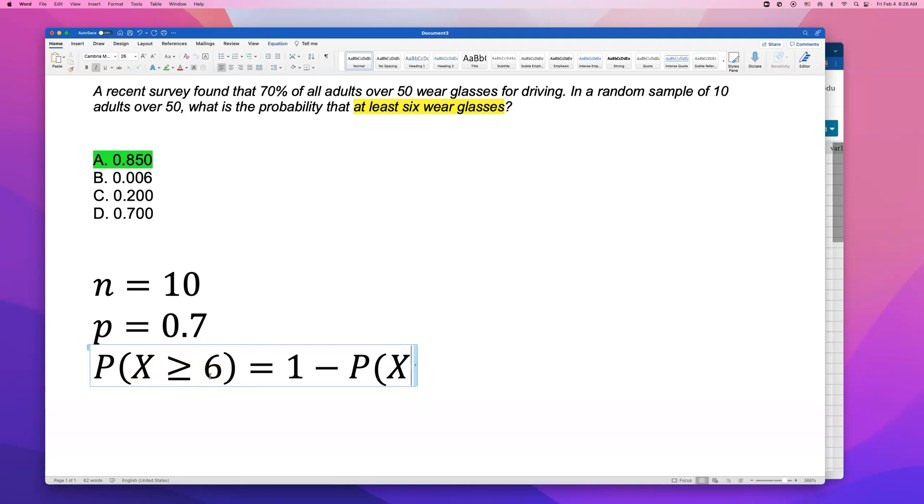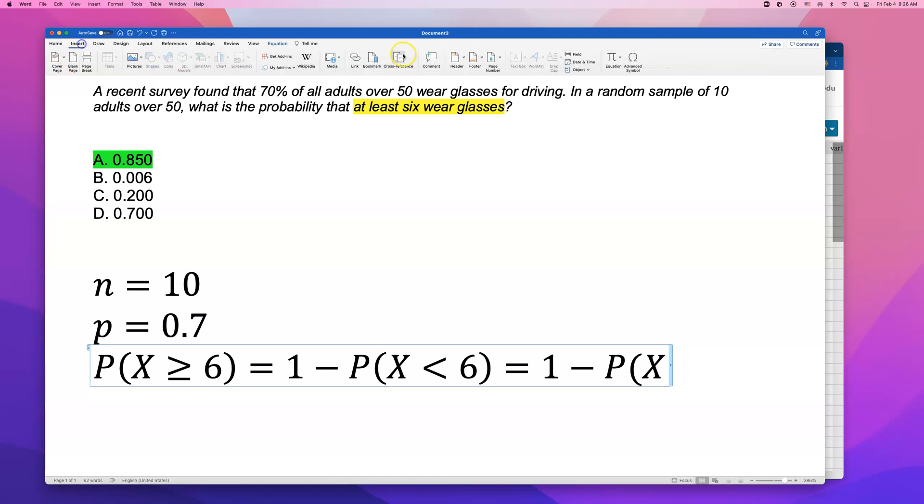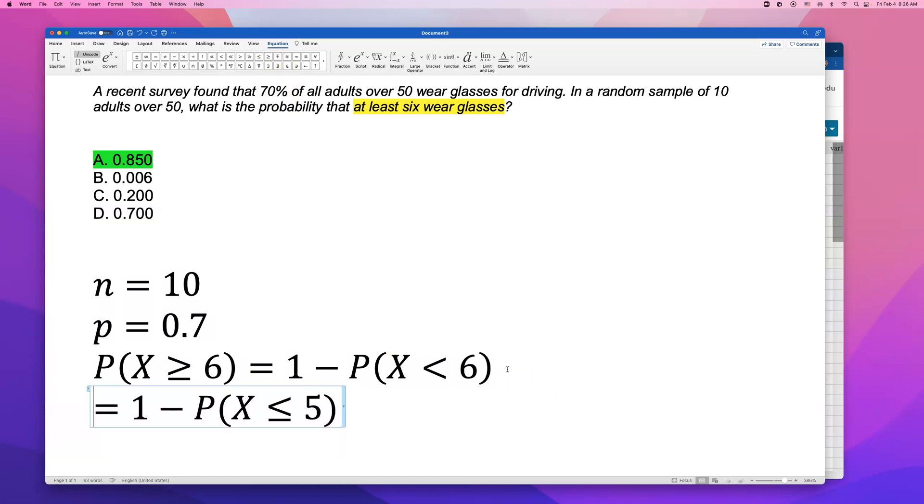So what's the opposite of greater than or equal to 6? That is less than 6. But there's no way 5.5 people wear glasses or 5.7 people wear glasses. We're looking at number of people who wear glasses, so it has to be an integer value, a counting number. So what is the first number that is smaller than 6? That's 5. So we're going to have to find probability of less than or equal to 5 people wearing glasses, and subtract that probability from 1.